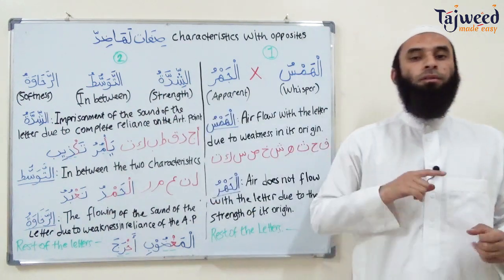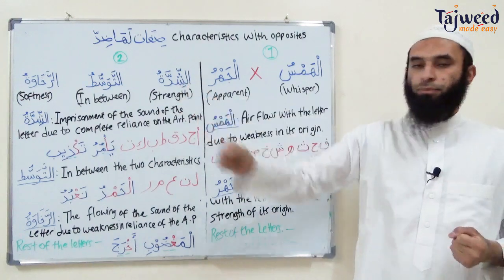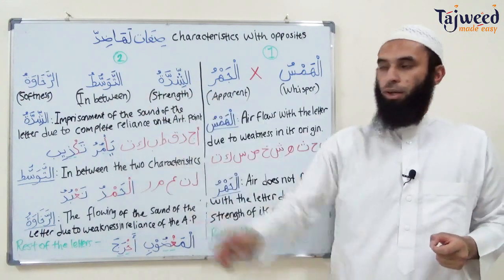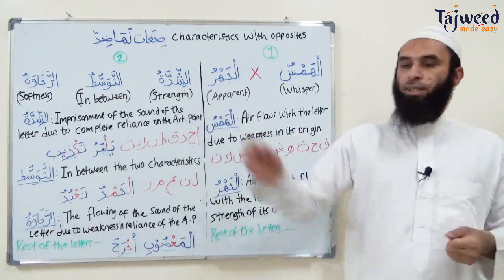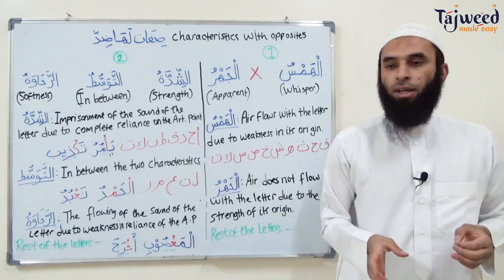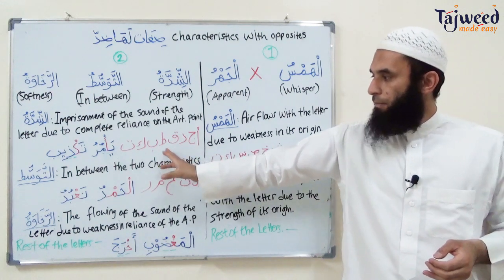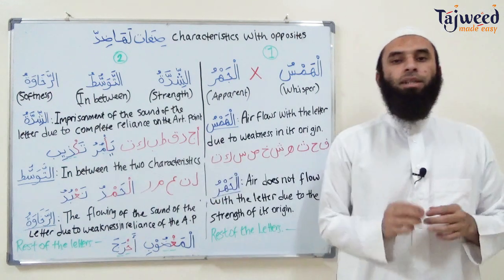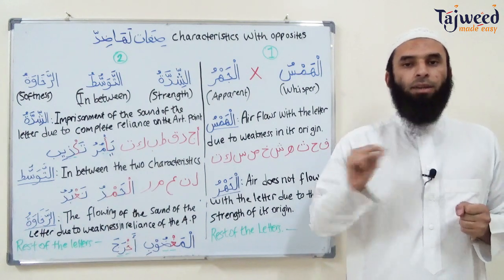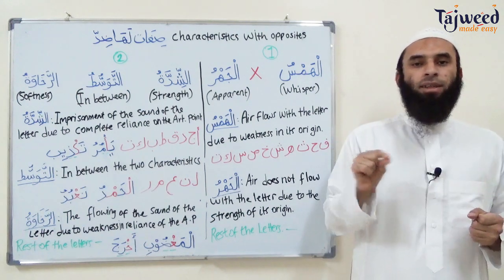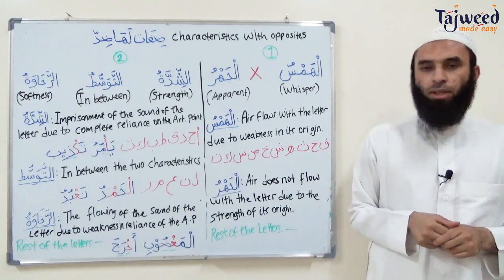Now the next group is to do with the flowing of sound — three groups of letters. Number one, al-Shidda, which means strength. Number two, al-Tawasut, in the middle. And al-Rakhawa, the soft letters. The al-Shidda letters are eight letters: Hamza, Jim, Dal, Qaf, Ta, Ba, Kaf, Ta — 'Ajidu Qit Bakat.' These letters are clearest with sukoon, but with fatha, kasra, or dhamma, whenever we pronounce them, the sound of the letters stops.